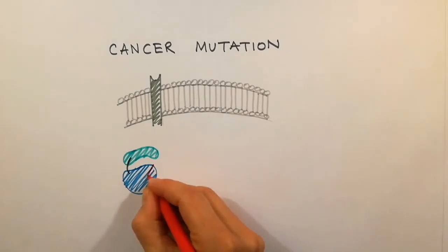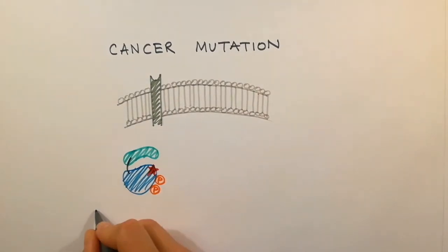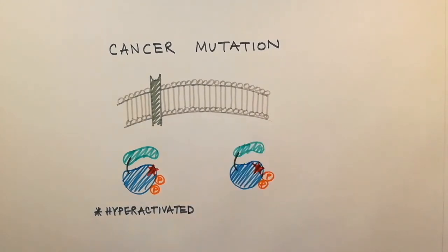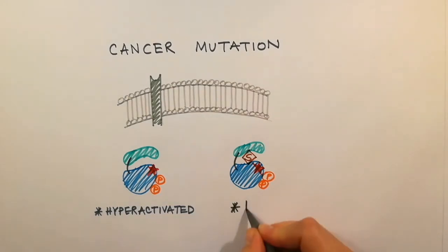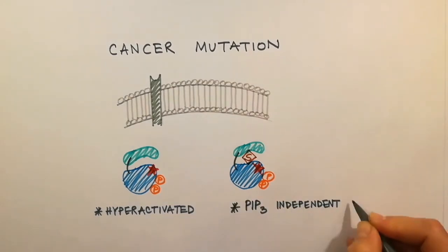Finally, mutations which disrupt the auto-inhibited conformation of AKT drive hyperactivation of AKT in the cytosol. AKT is now capable of substrate engagement and PIP3-independent signaling. Such mutations transform AKT into a constitutively active kinase which presumably then drives cell proliferation and survival and may play an important role in the development of cancer.